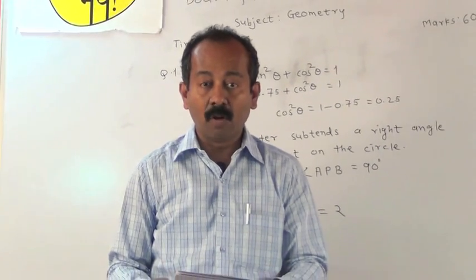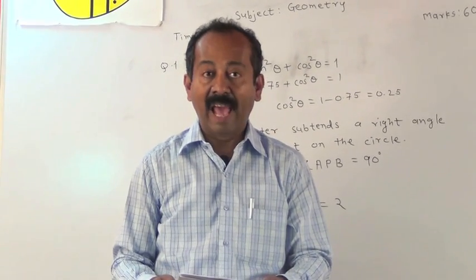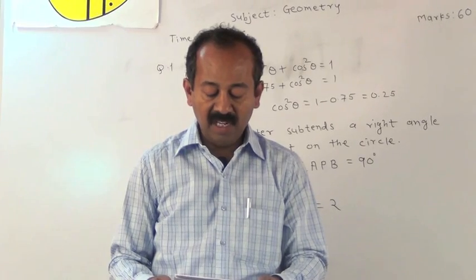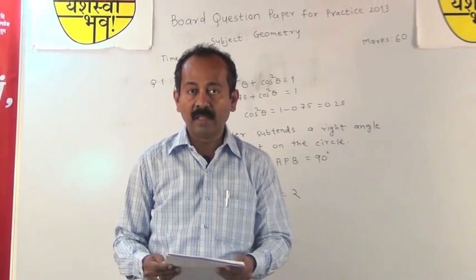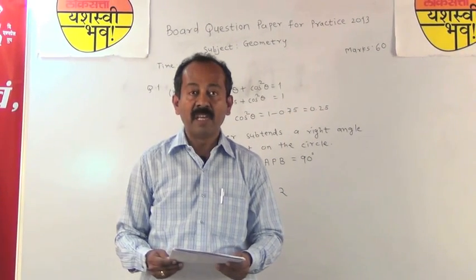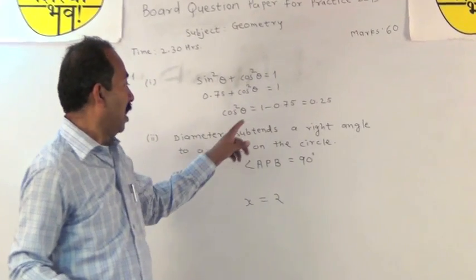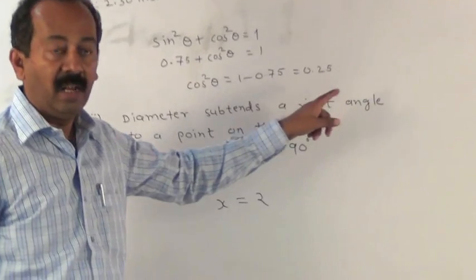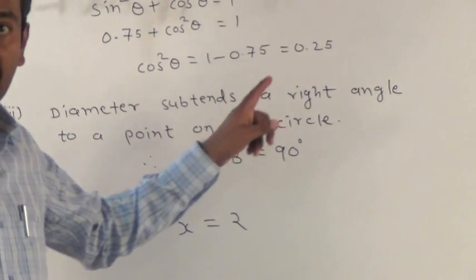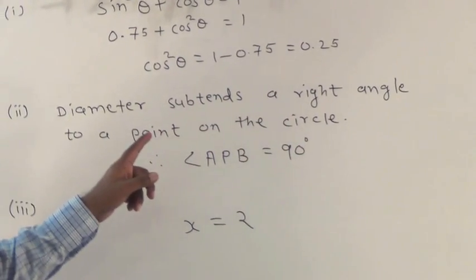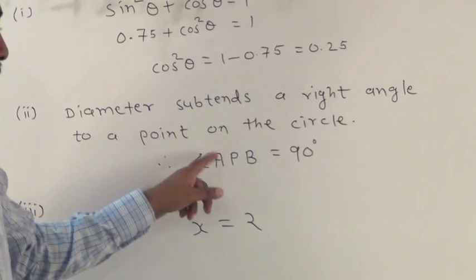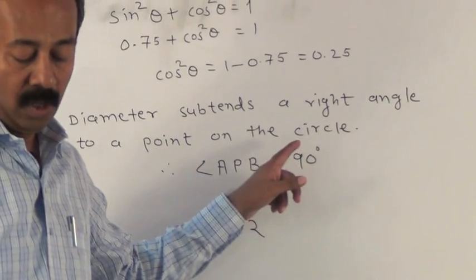O is the center of the circle. AB is the diameter. P is any point on the circle other than A and B. What is measure of angle APB? Now, we know that diameter subtends a right angle to a point on the circle. So, after drawing angle APB we get measure angle APB is equal to 90.